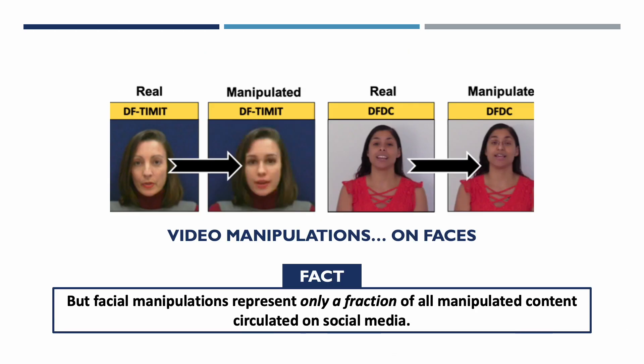A lot of focus in the recent past on the video manipulation front has been on manipulations of faces, due to various deep fake methods and detection methods. But facial manipulations represent only a fraction of all manipulated content circulated on social media. Modifications also include changing the background context, text, and audio in media, aesthetic edits, adding or removing entities, and temporal manipulations. These manipulations can be performed in a matter of clicks using state-of-the-art video editing tools like Adobe After Effects, Lightroom, Filmora, GIMP, and many more.